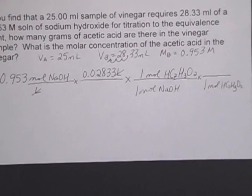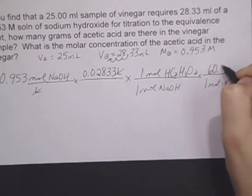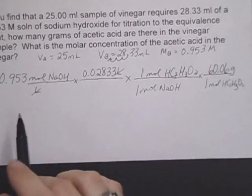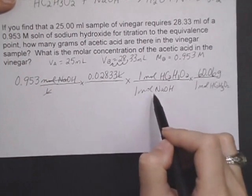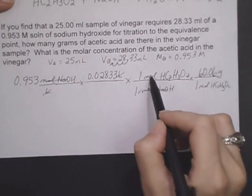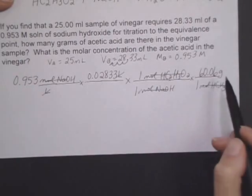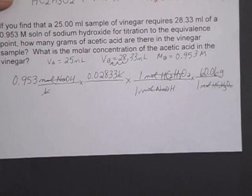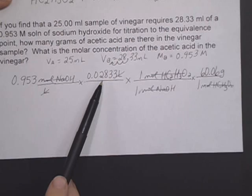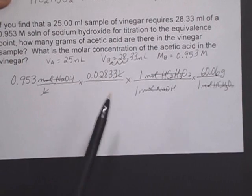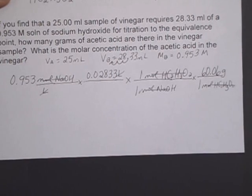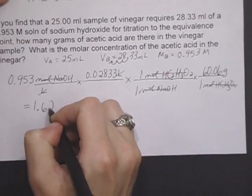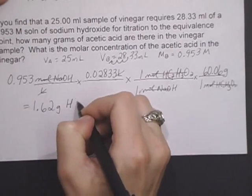The molar mass of acetic acid, adding everything up, 60.06 grams. I want to make sure all my units are okay. Moles of NaOH on top and on the bottom. Moles of acetic acid on the top and on the bottom, which would leave me with grams of acetic acid. So I multiply through 0.953 times 0.02833 times 60.06. And I end up with 1.62 grams of acetic acid.